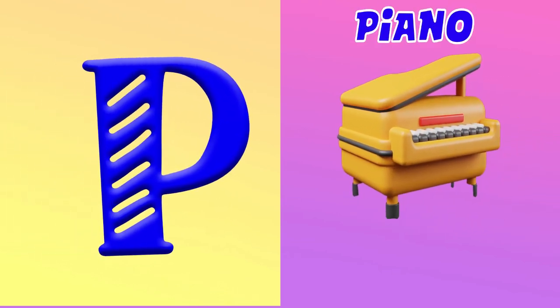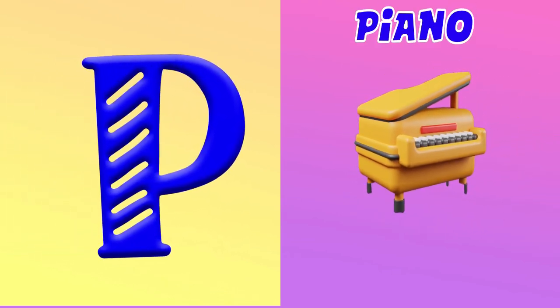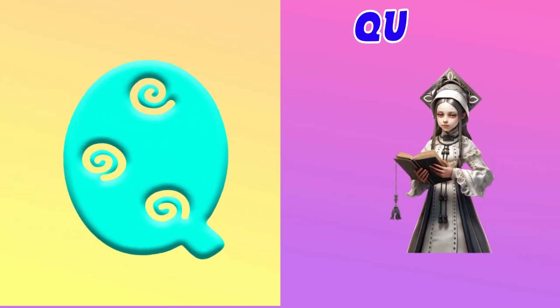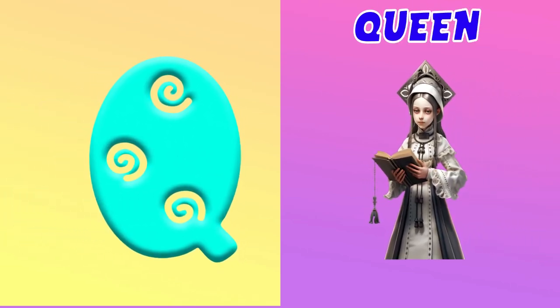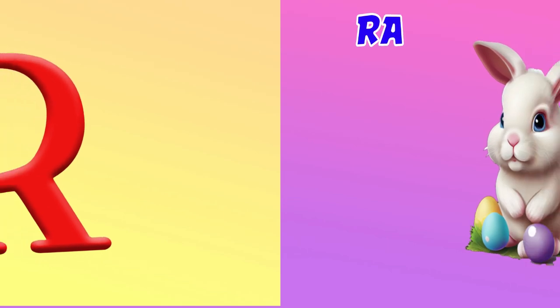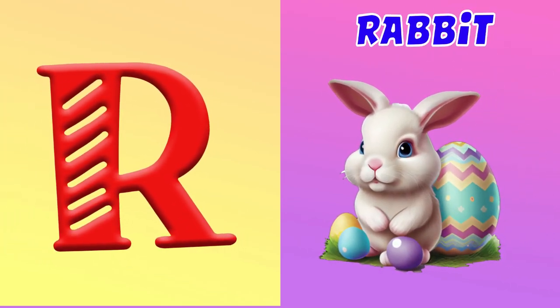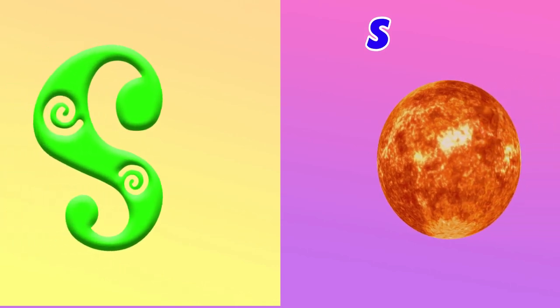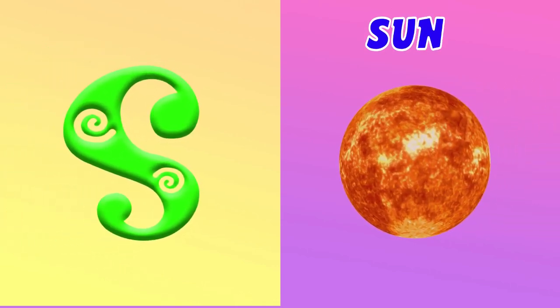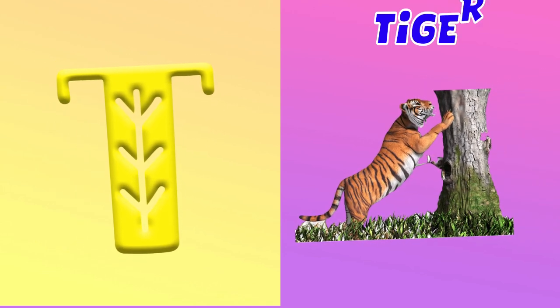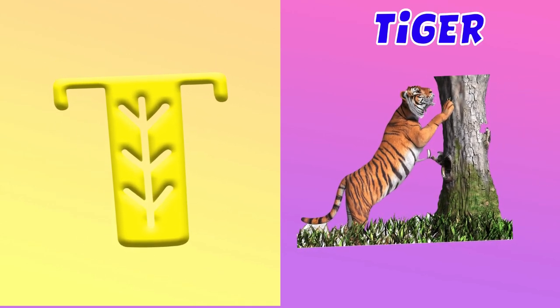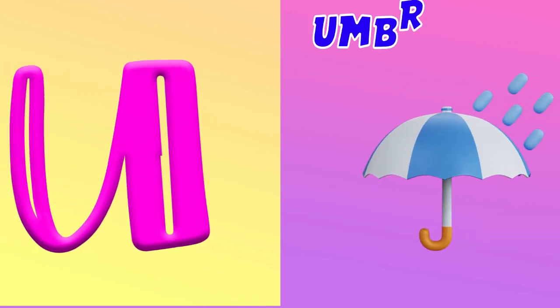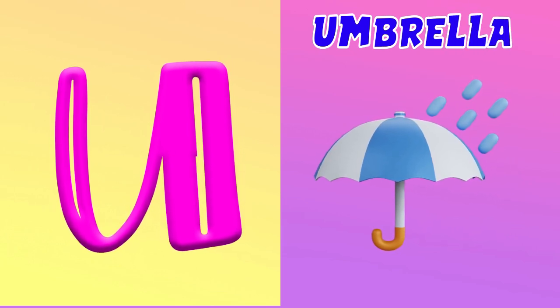P for Piano. Q for Queen. R for Rabbit. S for Sun. T for Tiger. U for Umbrella.